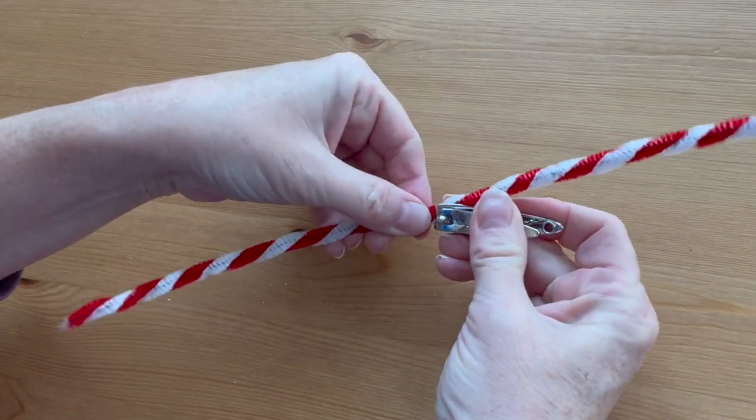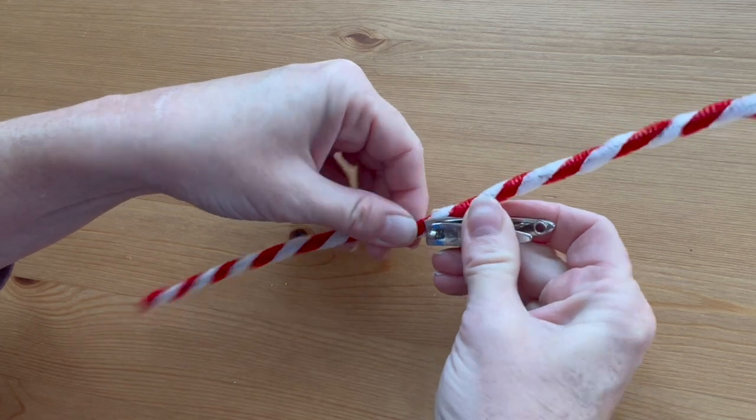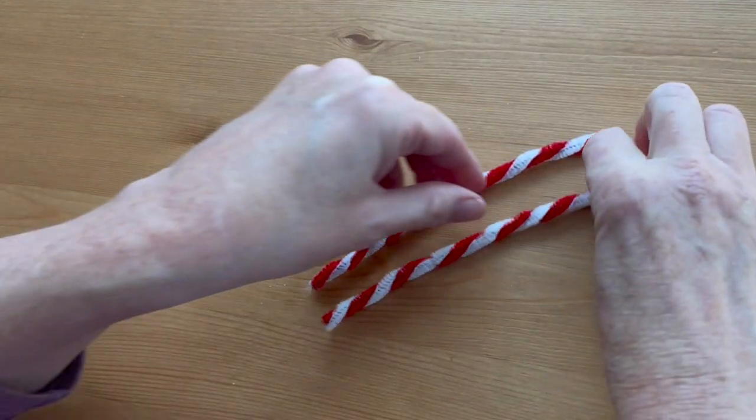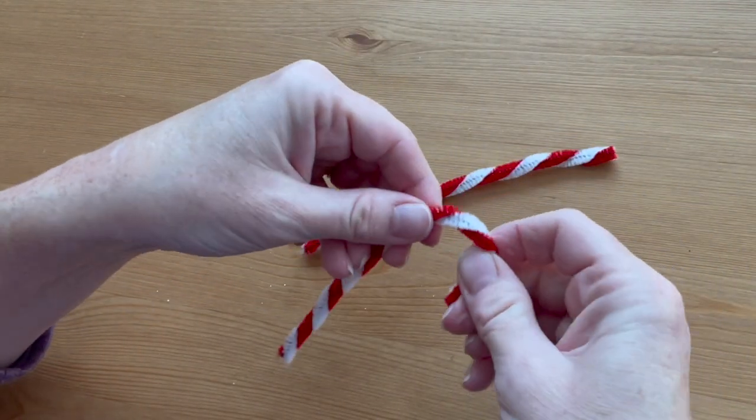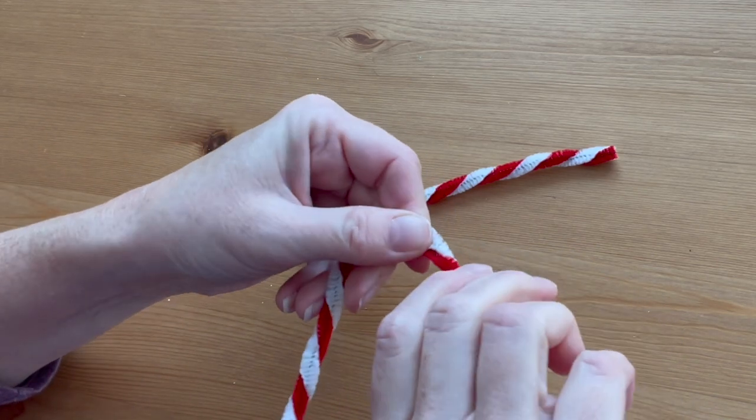Cut the twisted pipe cleaners in half with the fingernail clippers. Bend the top third of each one into a candy cane shape.